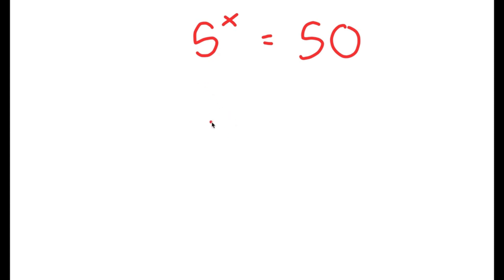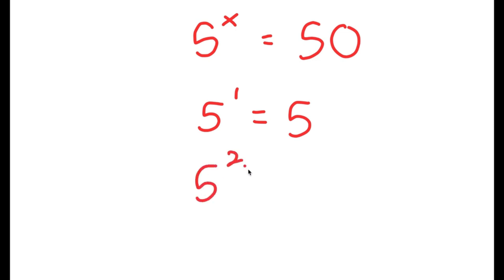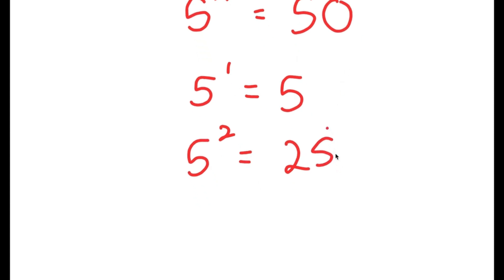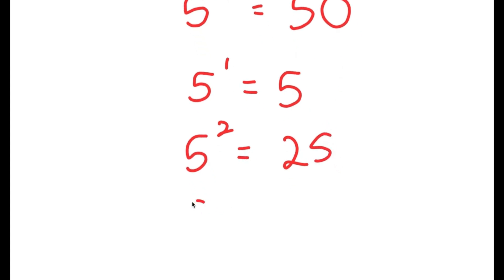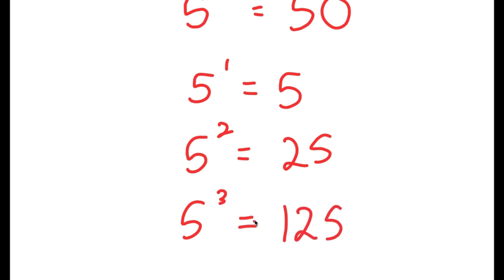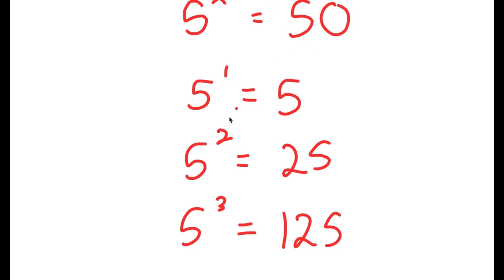To first start with this problem, let's test different values of x. If x is 1, then I get 5 to the power of 1, which is equal to 5 — this is too low. If x equals 2, I get 5 to the power of 2, which is 25 — again, too low. If x equals 3, I get 5 to the power of 3, which is 125, and this is way too high. So we know that the value of x is going to be somewhere in between 2 and 3, meaning it's going to be a decimal.